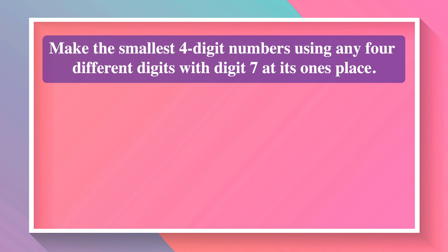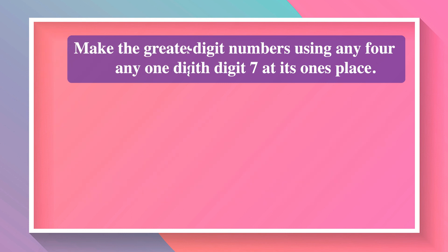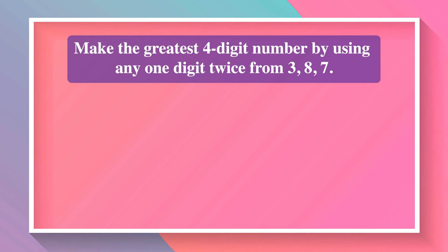Make the smallest 4-digit number using any 4 different digits with digit 7 at its ones place. The place of 7 is fixed at ones. We choose the other digits from 0,1,2,3,4,5,6,8,9. To make the smallest number, we choose the smallest available digits and place them at the higher places. The smallest number will be 1,027.